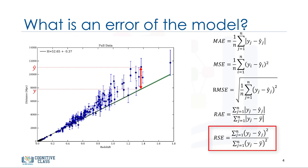Relative squared error is very similar to relative absolute error, but is widely adopted by the data science community as it is used for calculating r squared. R squared is not an error per se, but is a popular metric for the accuracy of your model. It represents how close the data values are to the fitted regression line. The higher the r squared, the better the model fits your data.